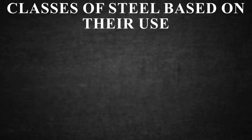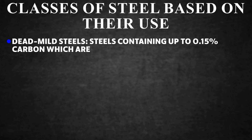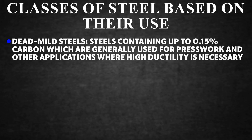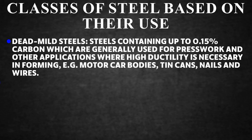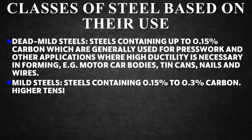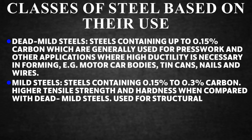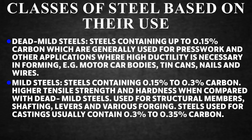Classes of Steel Based on Use. Dead mild steels contain up to 0.15% carbon and are used where high ductility is necessary — e.g., motor car bodies, tin cans, nails and wire. Mild steels contain 0.15% to 0.3% carbon, have higher tensile strength and hardness than dead mild steels, and are used for structural members, shafting, levers, and various forgings. Steels used for castings usually contain 0.3% to 0.35% carbon.